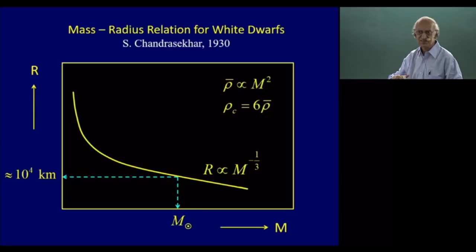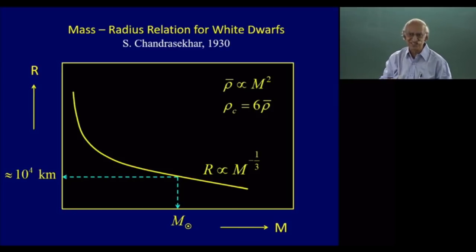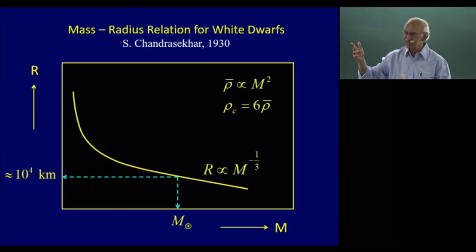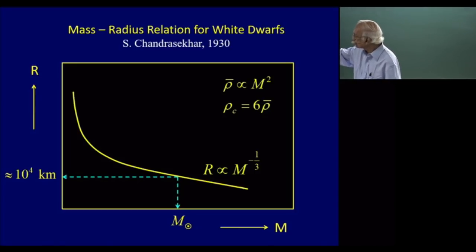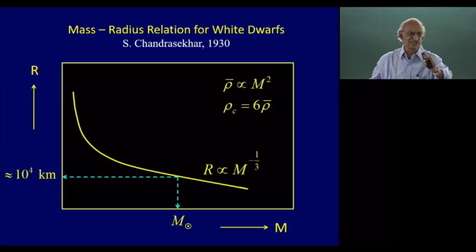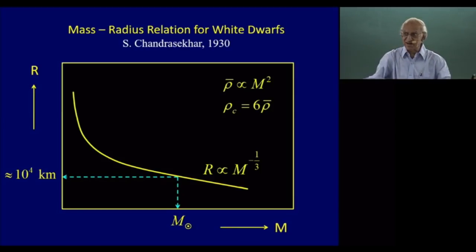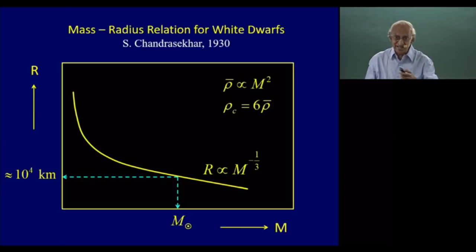He did one step further: he was interested in the companion of Sirius. At that time there were only three such objects known in the galaxy. His mass-radius relationship said that if you had an object whose mass was that of the Sun, its radius would be 10,000 kilometers — which fitted excellently with all three known objects. Walter Adams had demonstrated that the companion of Sirius had a radius of 10,000 kilometers. So this theory of Chandrasekhar was spectacularly successful.